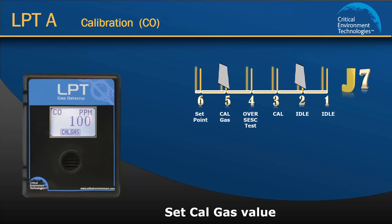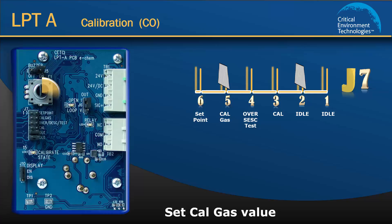By default the cal gas value is set to 100 ppm and calibrated by the factory using span gas at 100 ppm concentration. Therefore in this example the display should show 100 ppm. If it is not showing 100 ppm or if you are using a different cal gas concentration, use the rotary encoder dial to adjust the number. The ppm number on the display should match the cal gas concentration ppm.